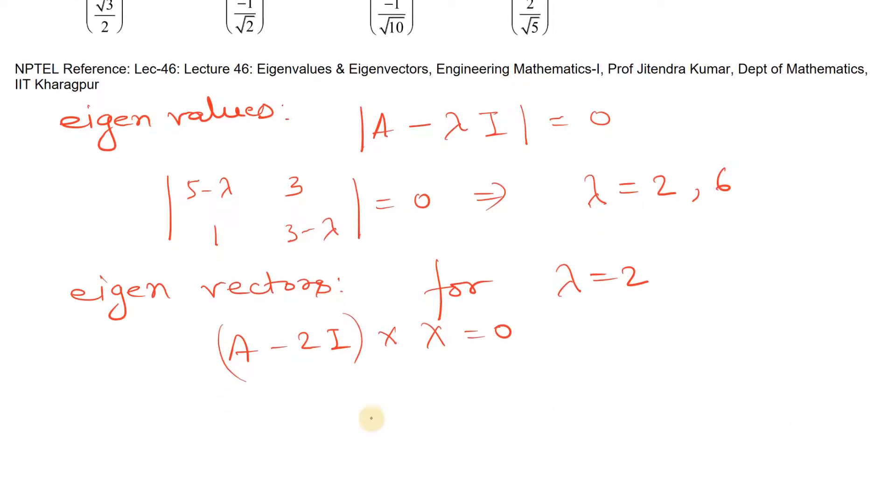Now we can also write this as: let's write this matrix 3, 1, 3, 1. This into x1, x2 is equal to 0.